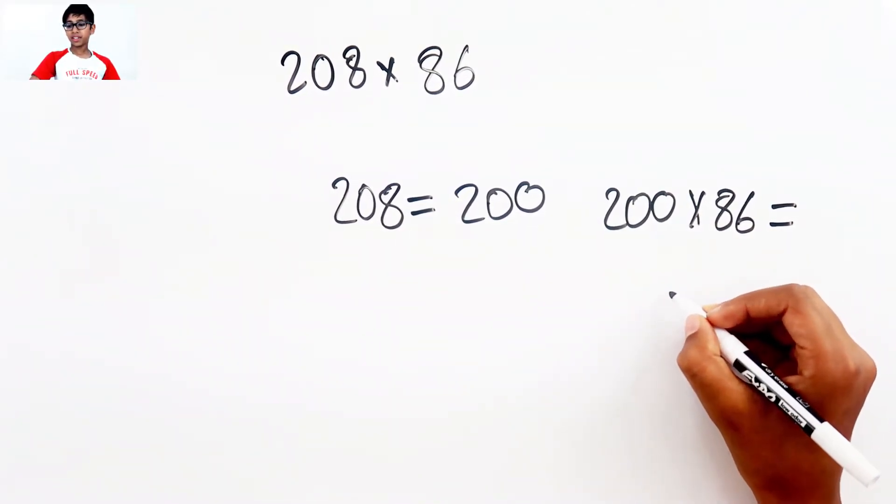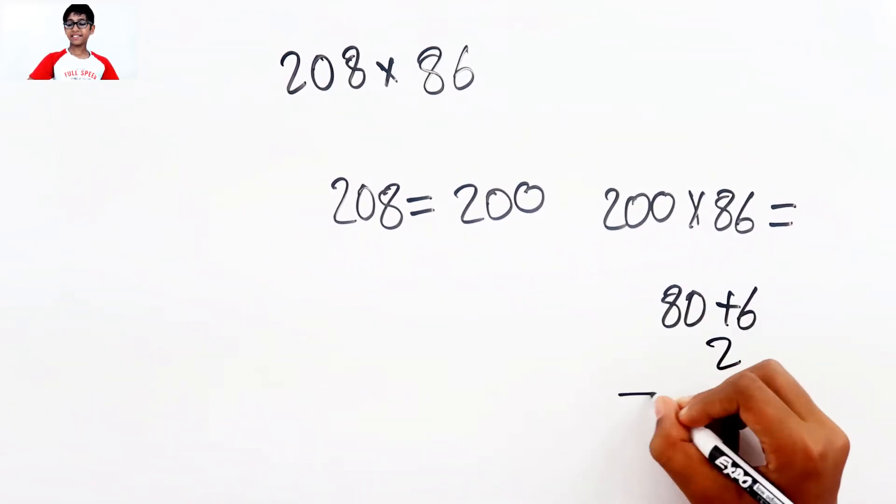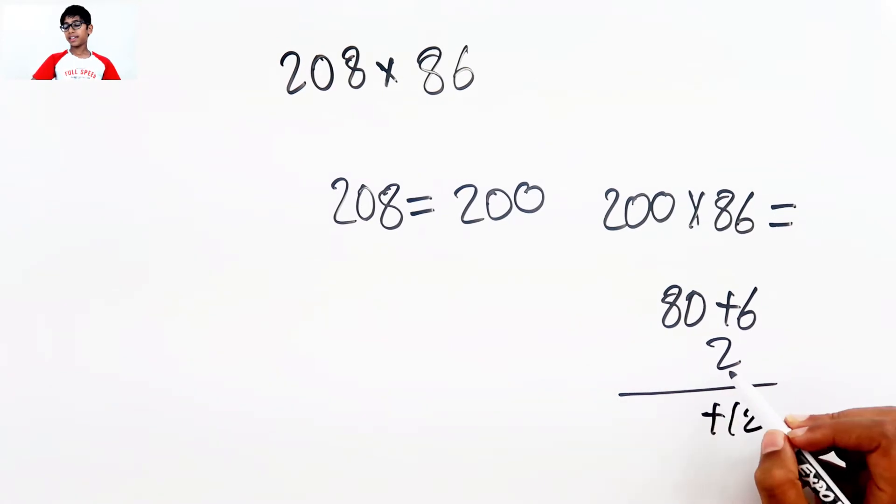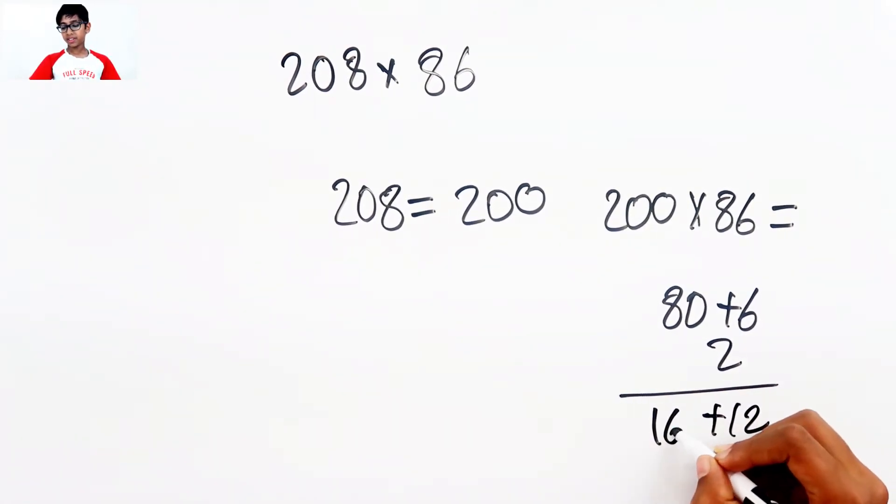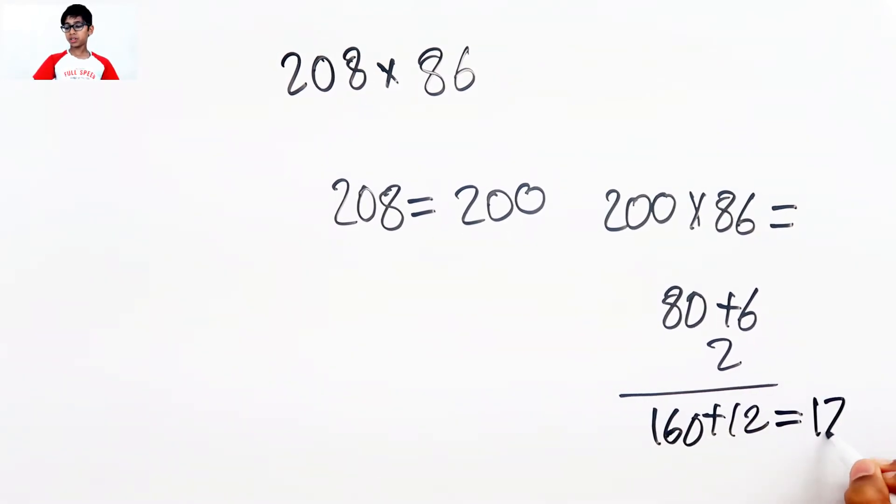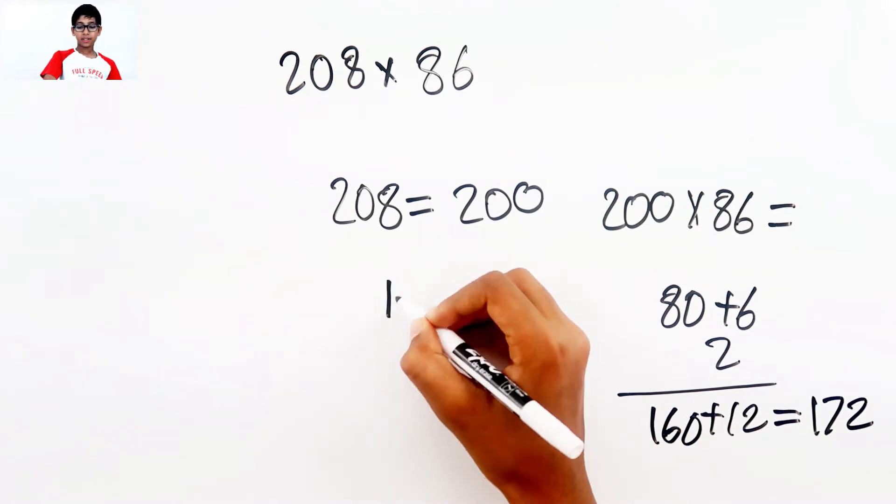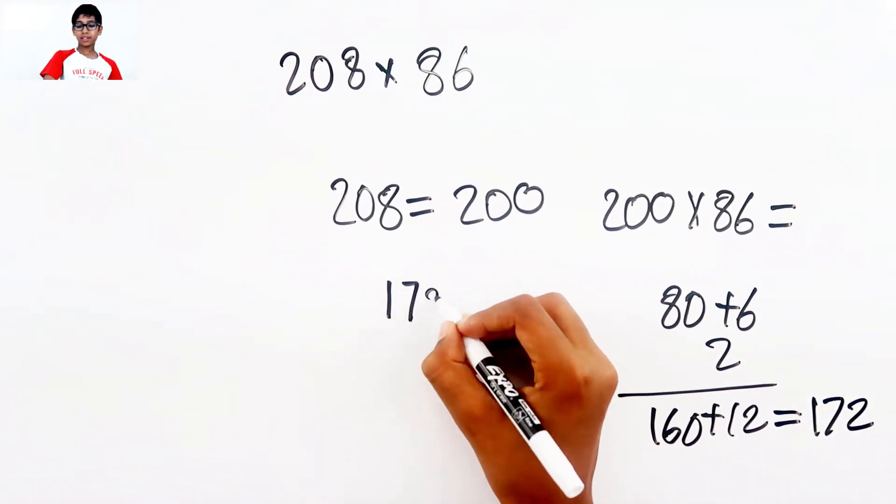So 200 times 86 equals... so 80 plus 6 is 2, 8 times 2, 80 times 2, 160 equals 172.